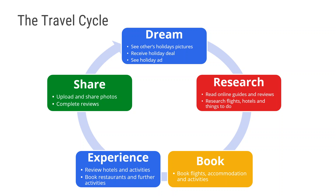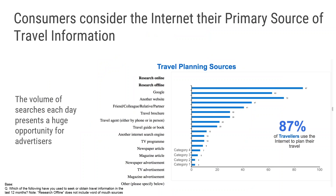We ran a survey asking: which of the following have you used to seek or obtain travel information in the last 12 months? 87% of travelers use the internet to plan their travel. Some of the platforms we're seeing include Google and friends and colleagues. Although we usually use friends and family as the most reliable resource, the internet is the second most chosen reliable source — and that's because of the transparency of it. There are good reviews and bad reviews. So those family and friends who come first, the internet is very important as well.